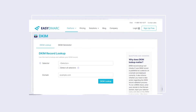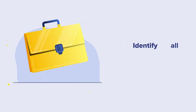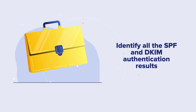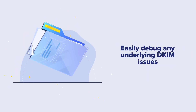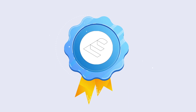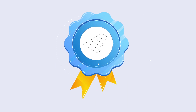Have you already implemented DKIM and want to check your settings? Use EasyDemark's DKIM record lookup, a free tool to perform a DKIM check. Our tool will help you look up and validate your DKIM record. Additionally, implement DMARC with EasyDemark to analyze your outgoing email stream. You will clearly identify all the SPF and DKIM authentication results and easily debug any underlying DKIM issues.